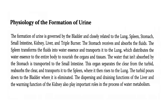Let's go to the physiology of the formation of urine. The formation of urine is governed by the bladder and closely related to the lungs, spleen, stomach, small intestine, kidney, liver, and the triple burner.